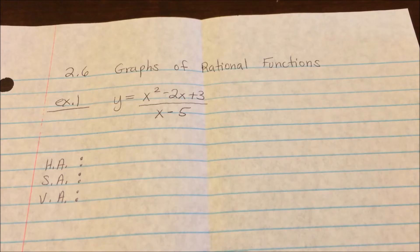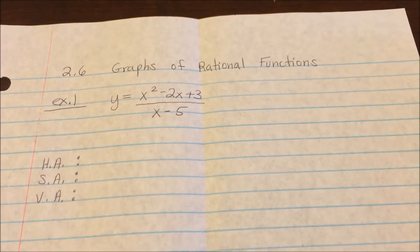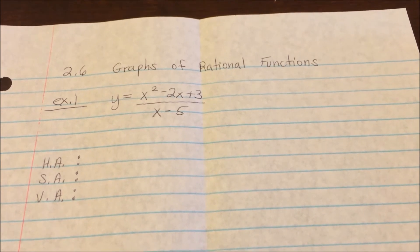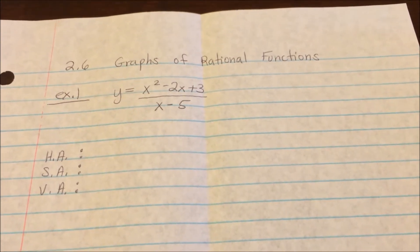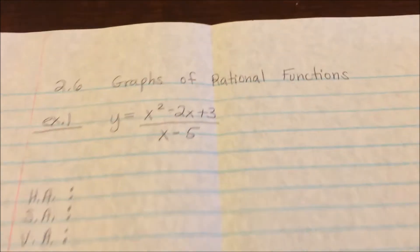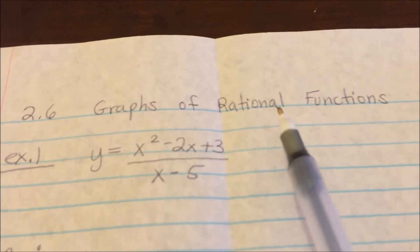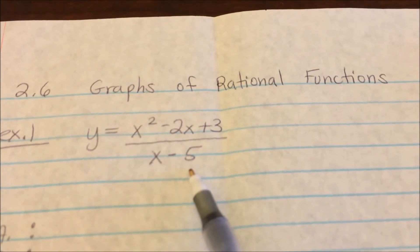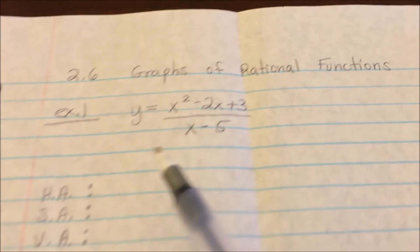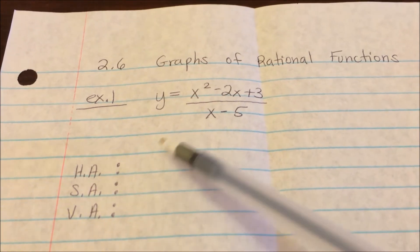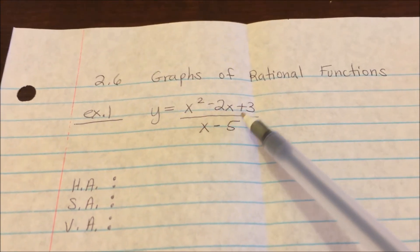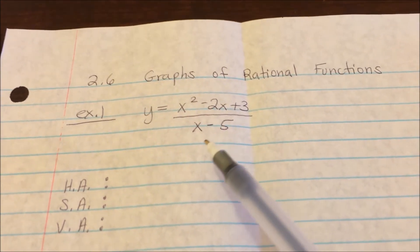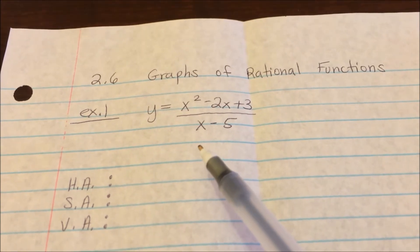This section is on 2.6 Graphs of Rational Functions. I'm going to take you through graphing a rational equation. When we talk about rational, it is when it's in a fraction format. We have asymptotes when you have a fraction format, but if you don't have a fraction format, then you don't have an asymptote.